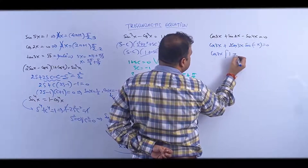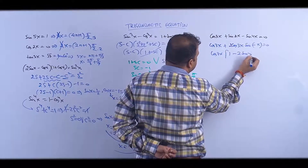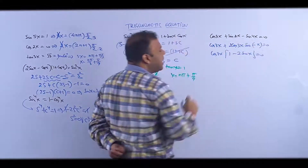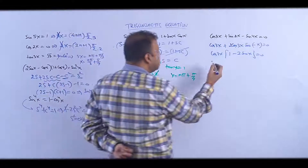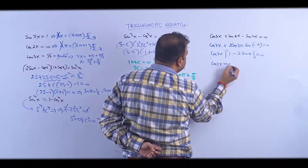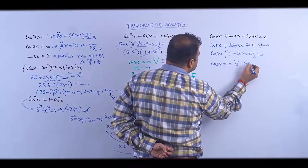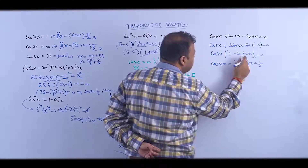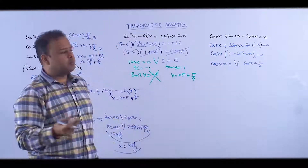After taking cos(3x) common, we get: either cos(3x) = 0 or sin(x) = 1/2. Ab aapko pata hai — now you can solve both cases.